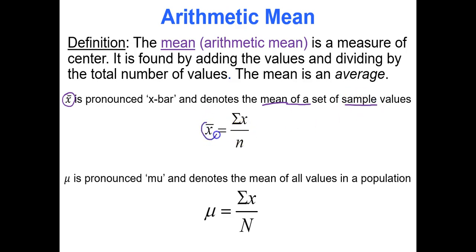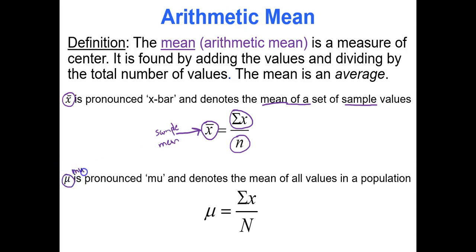X-bar, the sample mean, is the sum of all the data values — that's sigma x — divided by how many you have in the sample, n. Please learn that notation: x-bar is the sample mean. Mu is the Greek letter for the population mean. Mu equals the sum of all data values divided by the population size N.